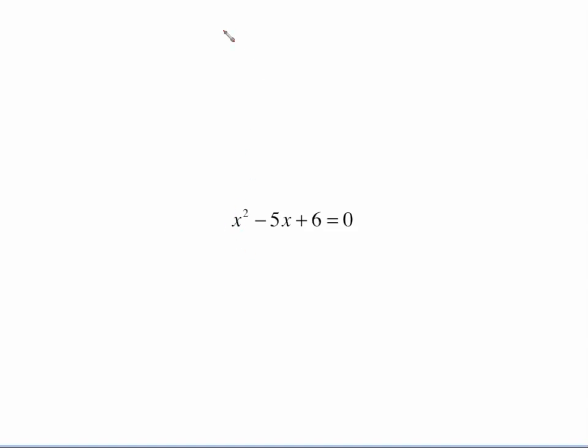So x squared minus 5x plus 6 is going to factor into x minus 3 times x minus 2. Because at this point, all we're saying to ourselves is what multiplies to give me 6 that adds to give me 5. As soon as you have written it as something times something equals 0, you can separate this out. Set that equal to 0, set that equal to 0.